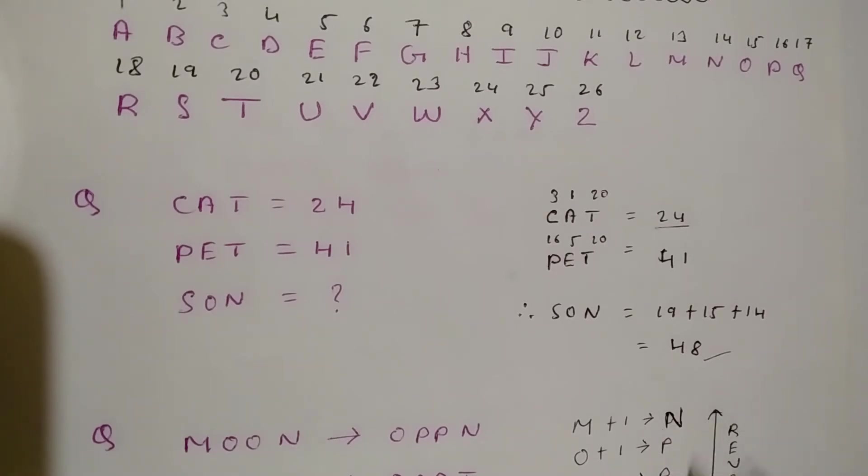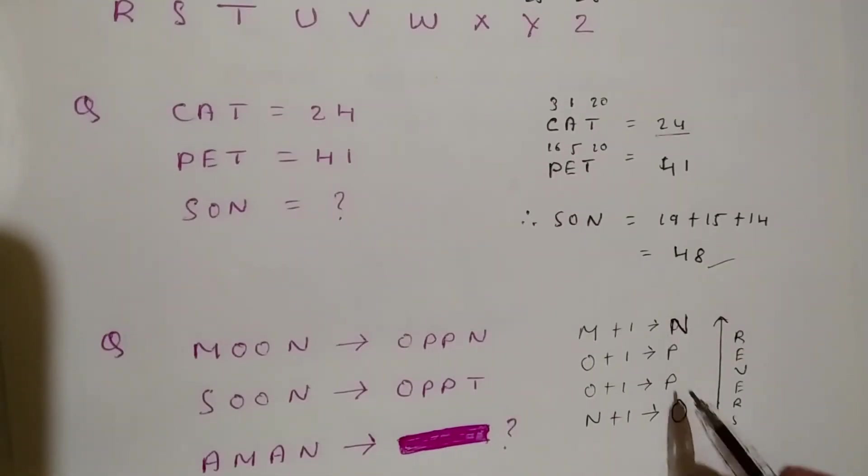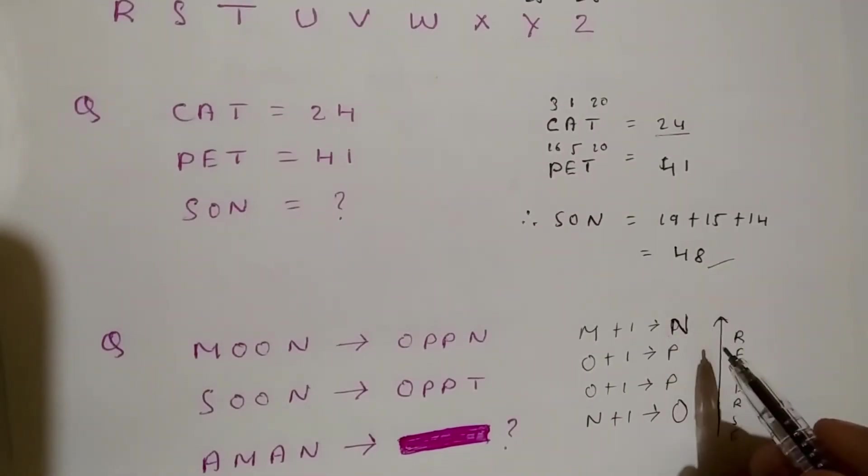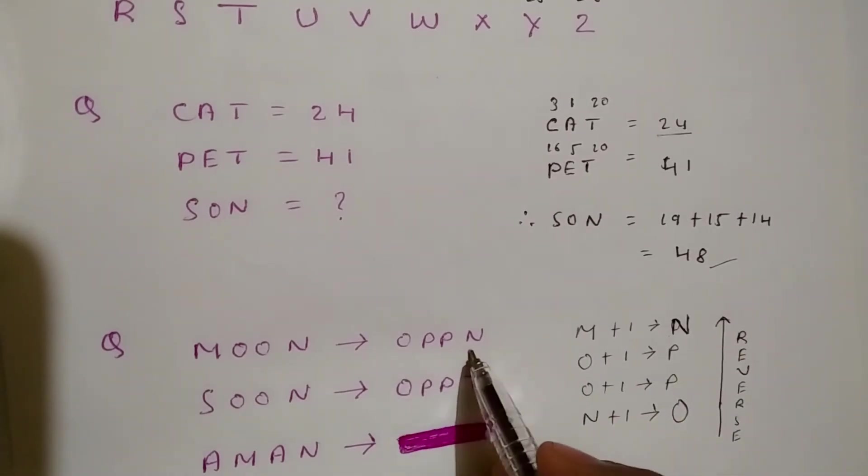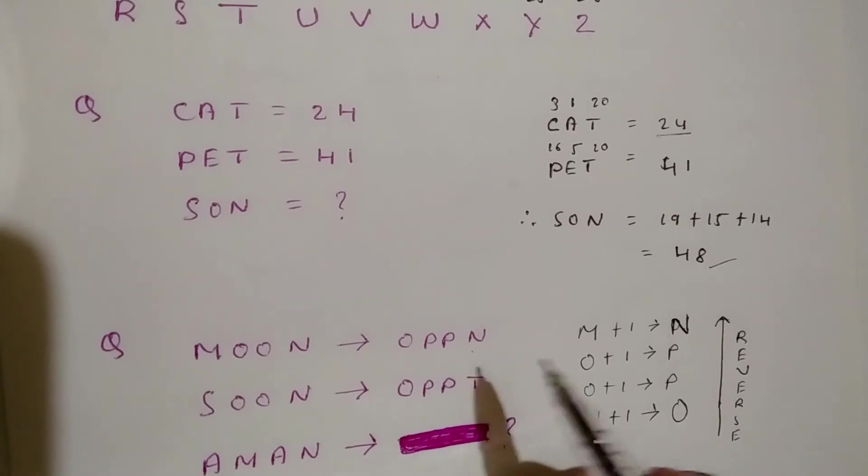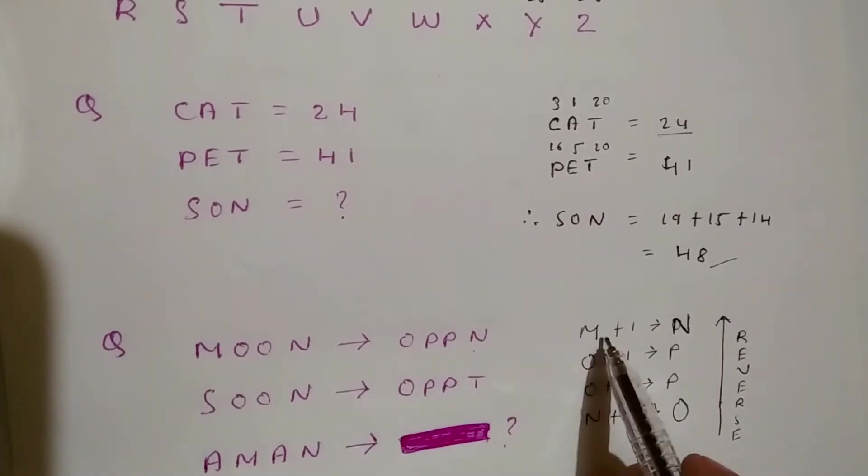So we get NPPO, and then we reverse it to get OPPN. By reversing it, we get OPPN.